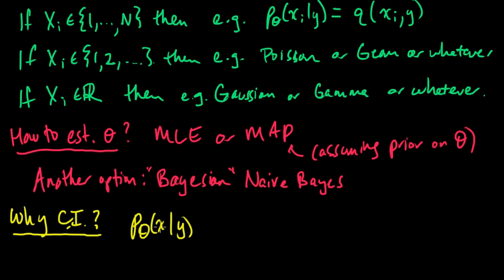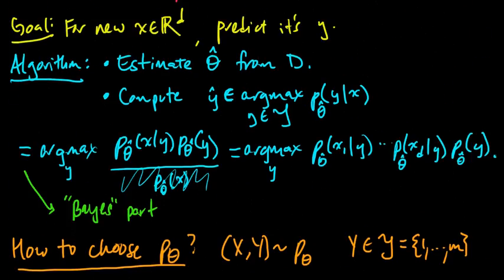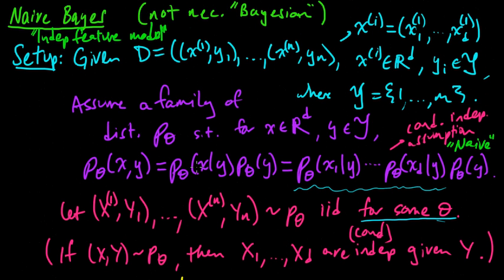So why didn't we do that? I mean, what's the point of assuming the factorization? That was right. The factorization, remember, was the key part of the naive Bayes model.